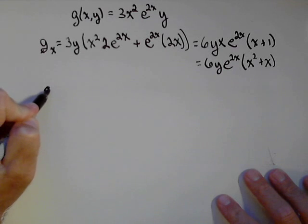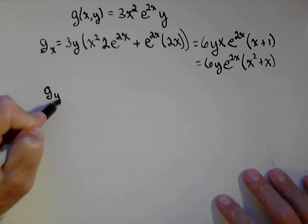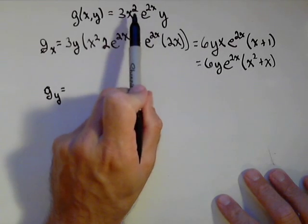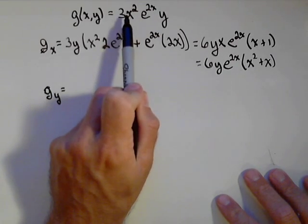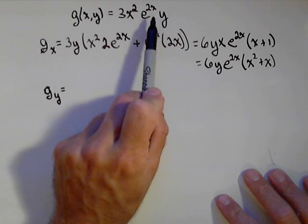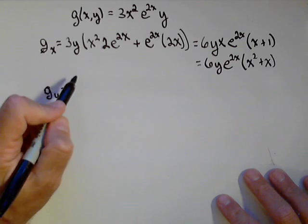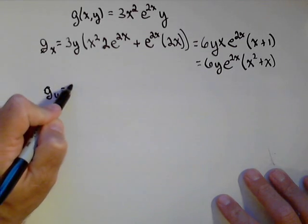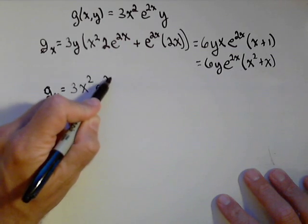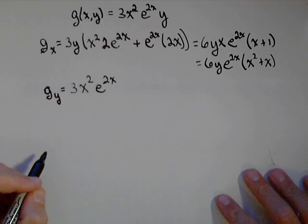You're going to find this next one is actually pretty quick. The derivative of g with respect to y, that makes this a constant. So, this whole part is a constant. We're taking the derivative of a constant times y, which is just a constant. Because the derivative of y will be one, so this is just 3x² e^(2x). And there's our partial with respect to y. It's done.